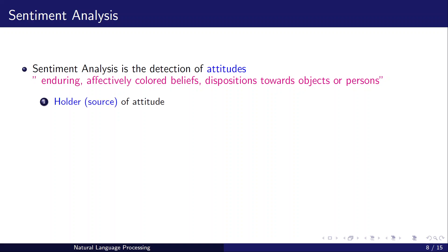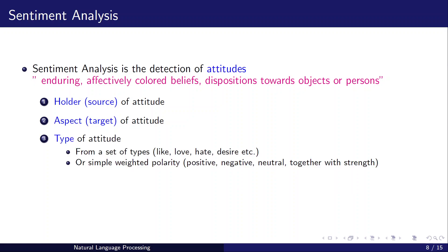Sentiment — the attitude of a person — can be defined by four terms: the holder or source of attitude, the target of attitude, and the type of attitude. The type can be positive, negative, or neutral, or a set of types such as love, hate, desire. It can also be on a scale of one to five. The simplest form is positive or negative — a two-class problem.